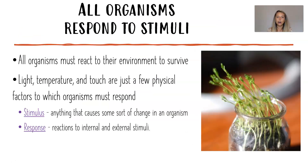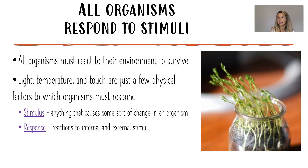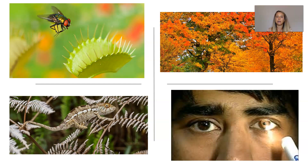Our next characteristic of life is that all organisms respond to stimuli. Organisms have to be able to react and respond to their environment in order to survive because environments change. Light, temperature, and touch are just a few examples of physical factors that organisms have to respond to. The stimulus is whatever is causing the change or reaction in an organism, and the response is the reaction to that internal or external stimulus. For example, a plant growing toward a window: the stimulus is the light and the response is growth in that direction — that helps the plant survive by getting light for photosynthesis.